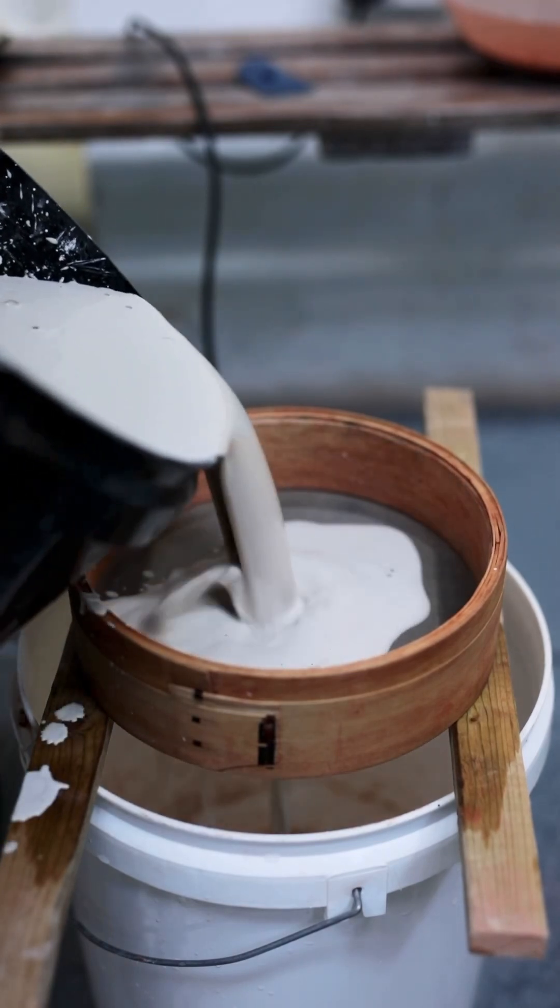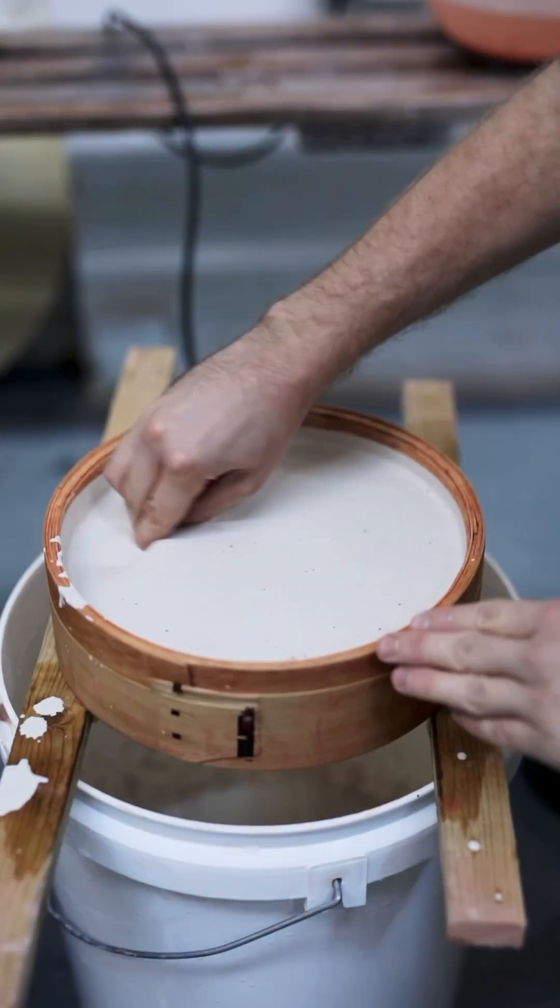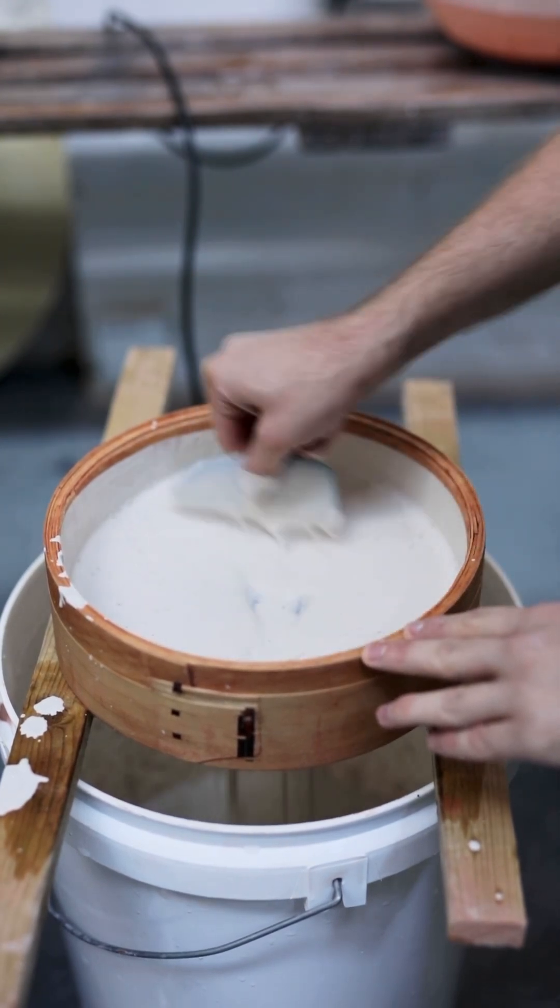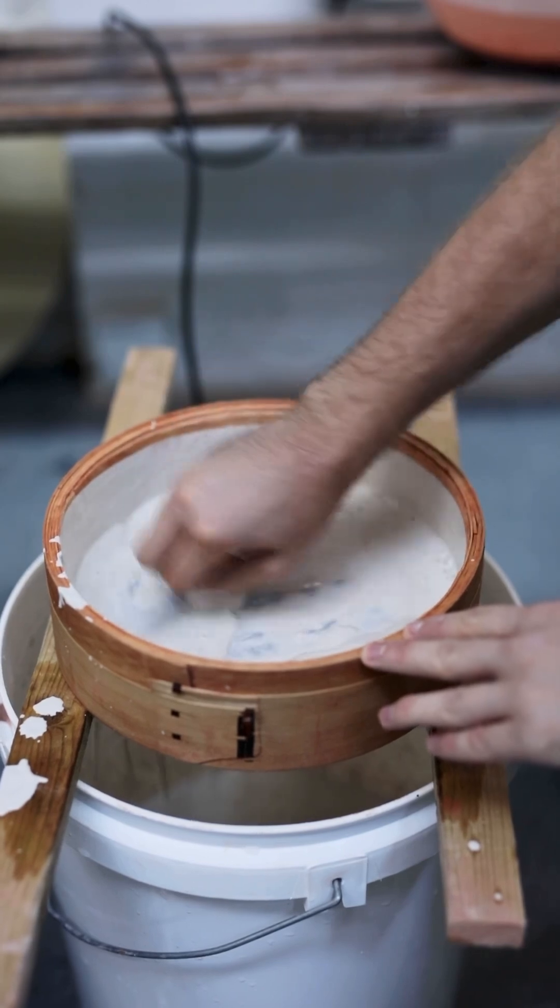These are all thoroughly mixed together and then sieved to make sure there aren't any larger chunks of raw material left, as these can cause lumps and irregularities that will appear on the final finished glazed surfaces of the pots.